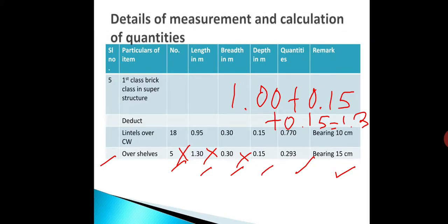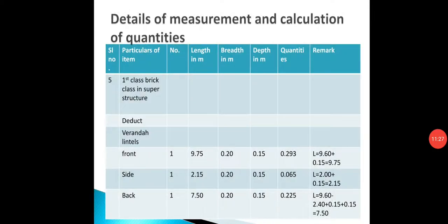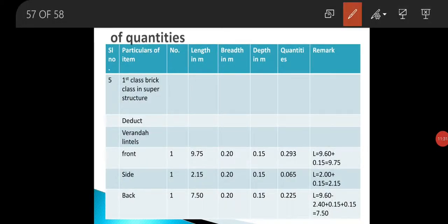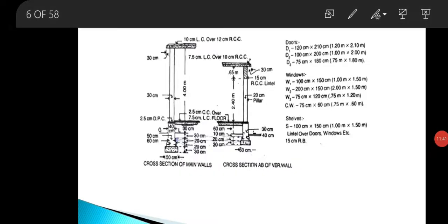Then we go for the baranda lintels. In the baranda, you can see the sectional detail of the baranda wall, where it is written '15 cm RCC lintel.' There is a lintel present above the pillars. This portion must be deducted.